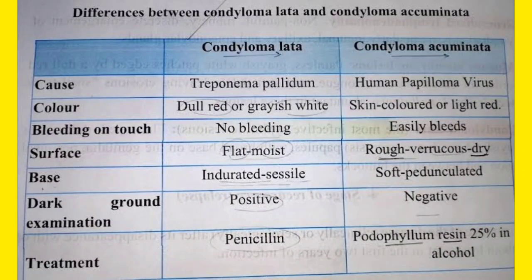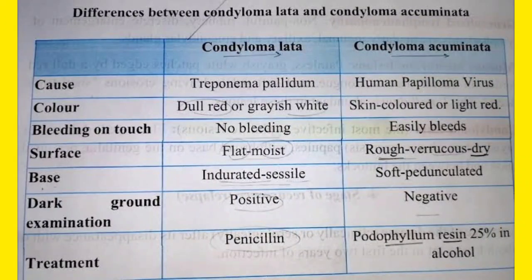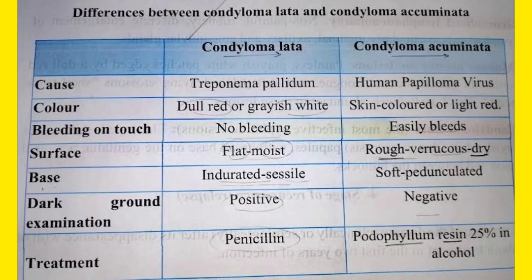Regarding dark ground microscopy: this test is done for Treponema pallidum in cases of syphilis. Condyloma lata will be positive on dark ground examination because it is associated with secondary syphilis. Condyloma accumulata, which is associated with human papillomavirus, will be negative on dark ground examination.